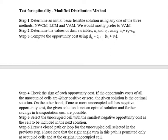Step 3: Compute the opportunity cost using d_ij = c_ij − (u_i + v_j). Step 4: Check the sign of each opportunity cost. If the opportunity cost of all unoccupied cells are either positive or zero, the given solution is the optimal solution. On the other hand, if one or more unoccupied cells have negative opportunity cost, the given solution is not an optimal solution.